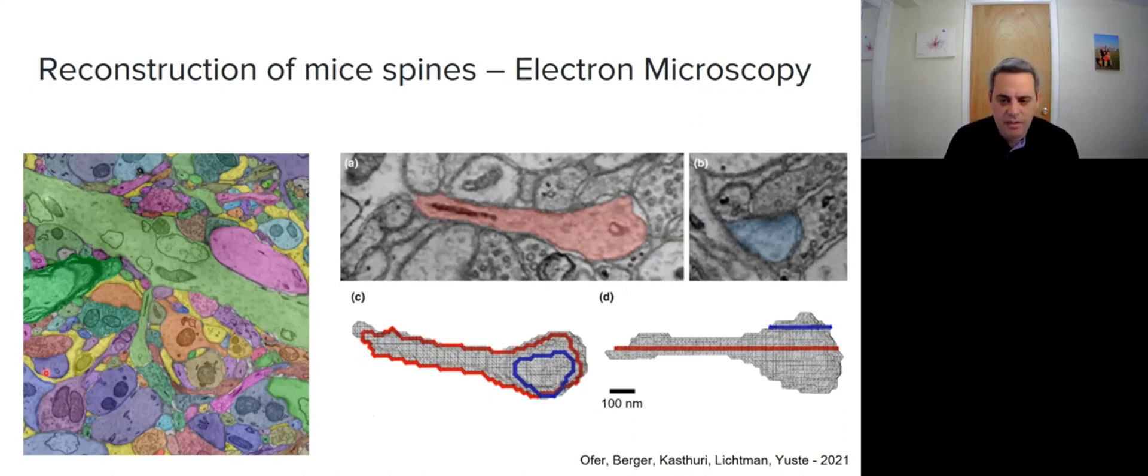At the left, you can see the segmentation with the dendrite and spine in green. At the right, we can see the same spine in two slices, red and blue, shown from above and from the side view.